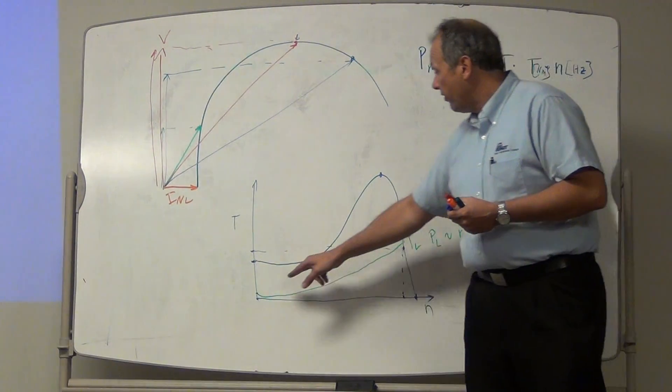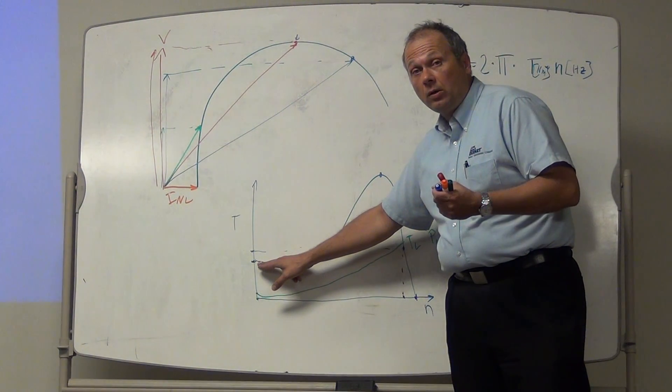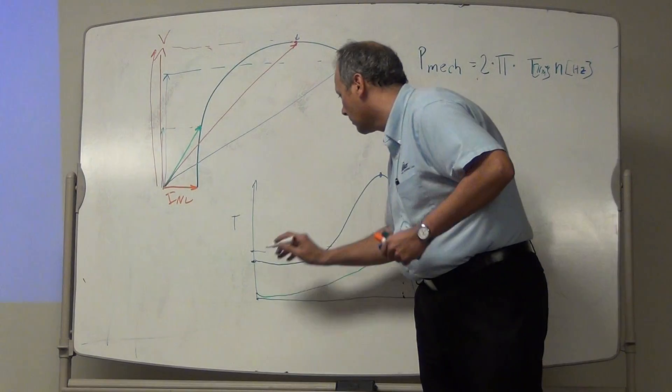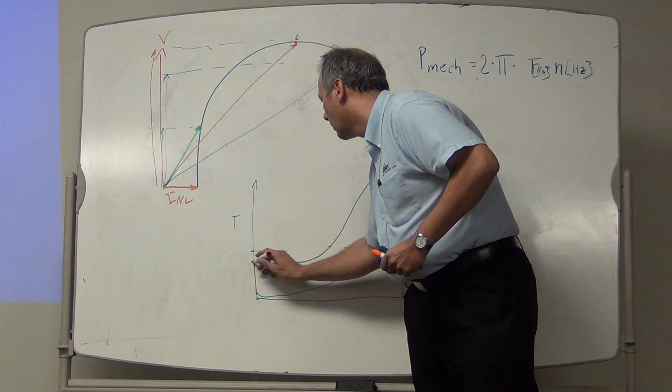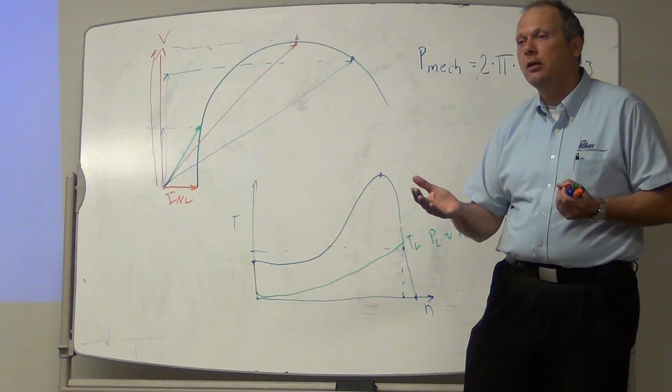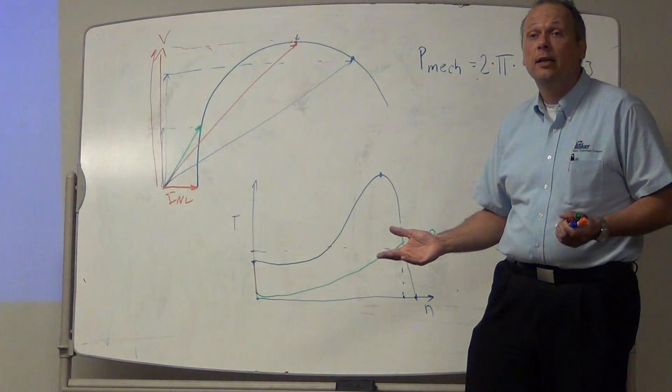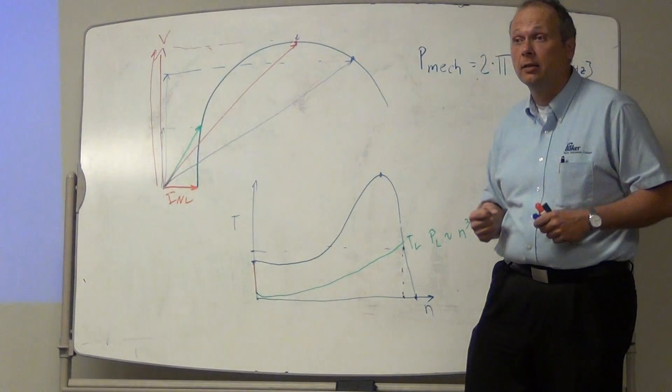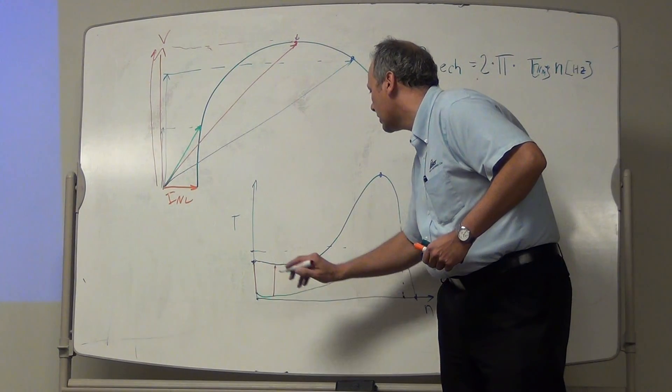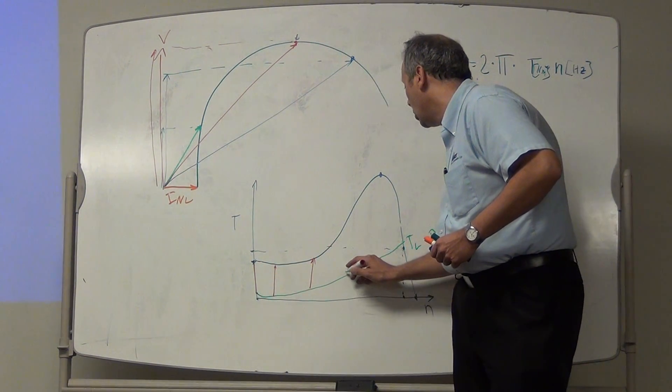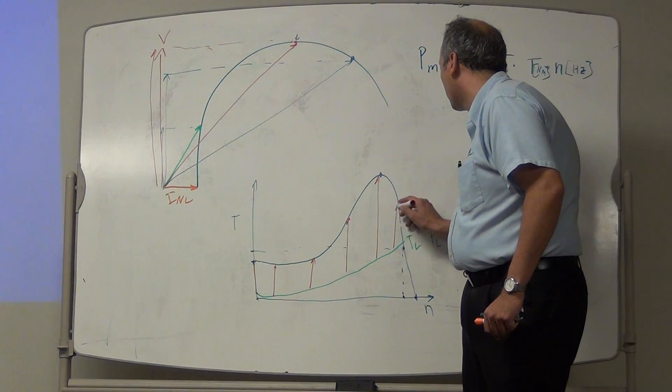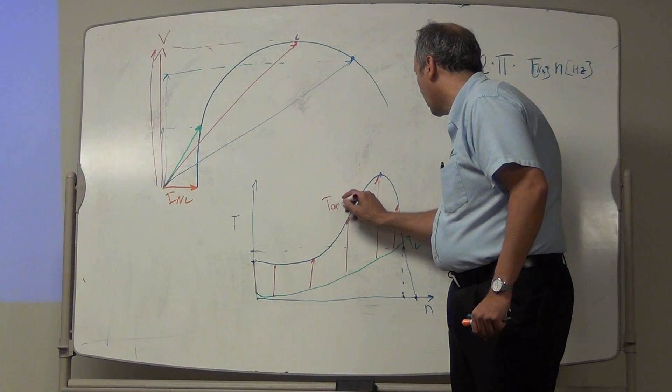Well, if I have more torque available by the motor than the amount of torque that the load demands, I have this delta right here. As long as the motor pushes harder than the load is requesting, only one thing can happen, and that is that the load starts accelerating. So as long as I have a positive distance between my green and my blue lines, I have an acceleration torque, T acceleration.